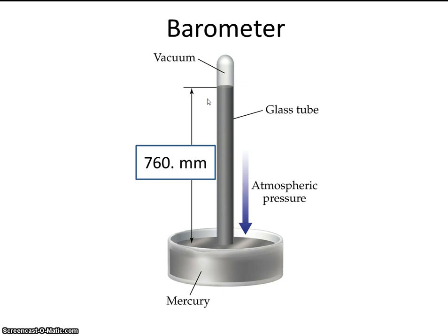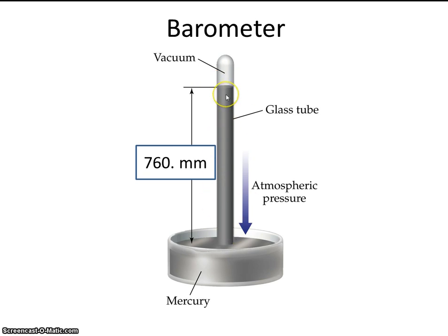So when the weatherman reports the daily pressure in millimeters of mercury, he's literally talking about how high the atmosphere will push the mercury up the tube.